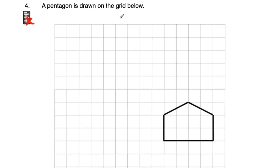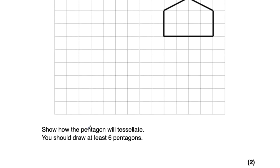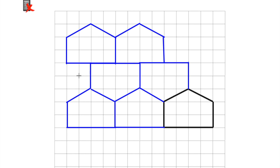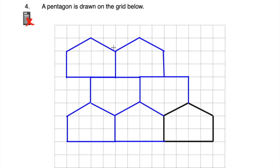Question number four says a pentagon is drawn on the grid below. We've got this grid with an irregular pentagon - it's irregular because the angles are not all the same and the sides are different lengths. This is not a regular pentagon, and regular pentagons don't tessellate anyway. But here we've got an irregular pentagon and we've been asked to show how it tessellates - you should draw at least six more pentagons. These pentagons do tessellate. We could carry on the pentagons going across sideways, then put a row of upside-down pentagons above them, and just carry on. I've drawn one, two, three, four, five, six as required, and those pentagons fit together with no gaps between them.